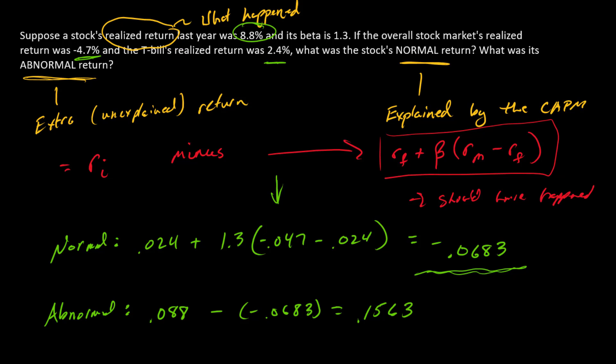So another thing to keep in mind here is this is a decomposition. So the abnormal plus the normal should equal the total realized return. So let's just check and see if that is true. So the normal, just do it right down here, the normal is minus 0.0683 plus 0.1563. What does that equal? Exactly 0.088. So there's the normal, there's the abnormal, and there's the total or the realized return.